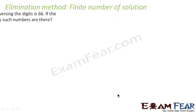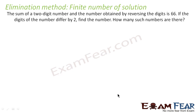Let's take an example with a finite number of solutions. The question says: the sum of a two-digit number and the number obtained by reversing its digits is 66. If the digits of the number differ by 2, find the number. To solve this, let's assume the two digits of the number are x and y.